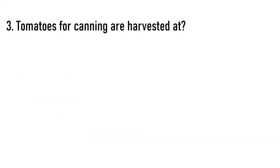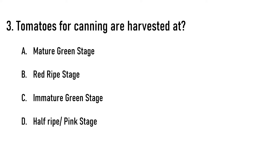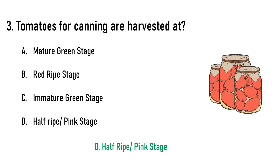Next question: Tomatoes for canning are harvested at which stage? Options are: A) mature green stage, B) red ripe stage, C) immature green stage, D) half ripe or pink stage. The correct answer is option D, half ripe or pink stage.